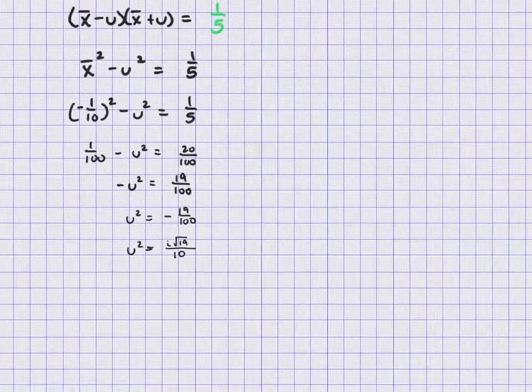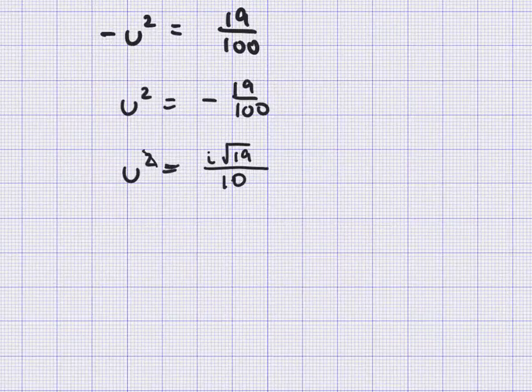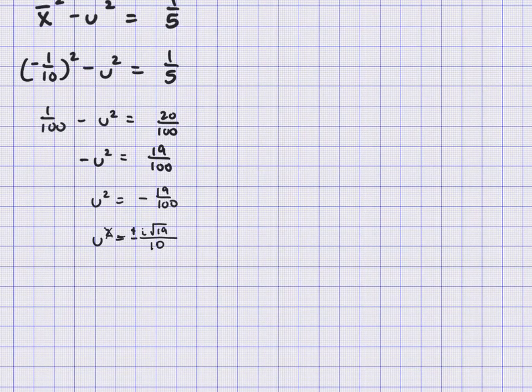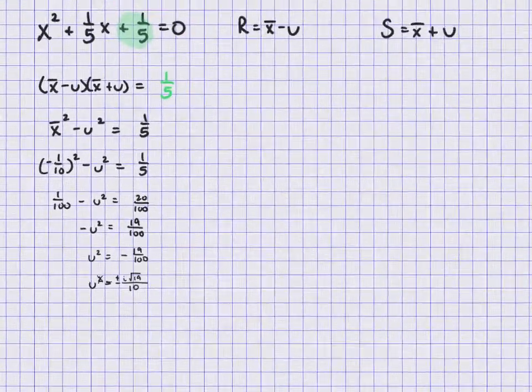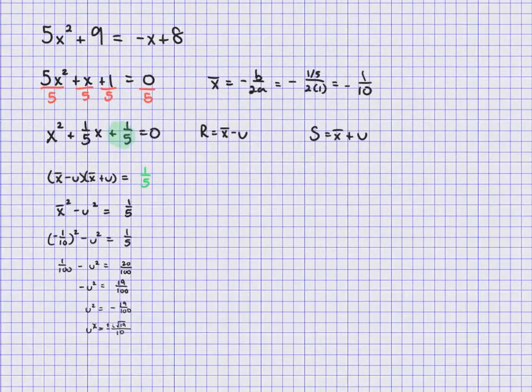So what do we do now? We have to take that u. And I messed up there, let me change that to just a u. And I also have a plus or minus there. So I'm going to take that i radical 19 over 10, and I'm going to substitute in up here.